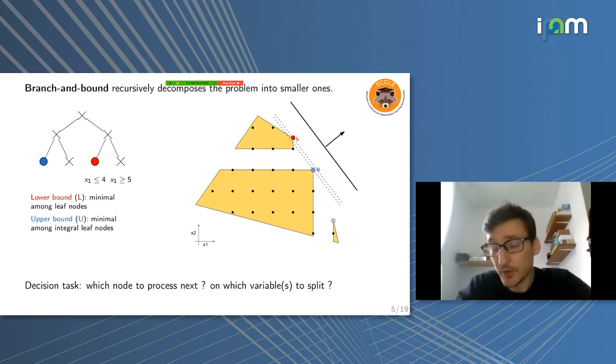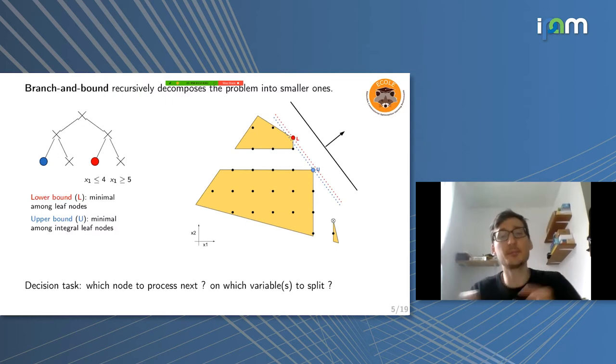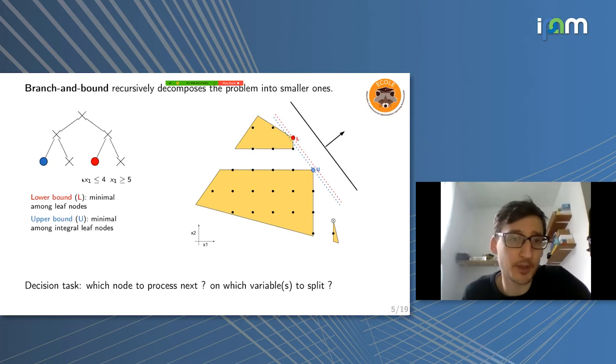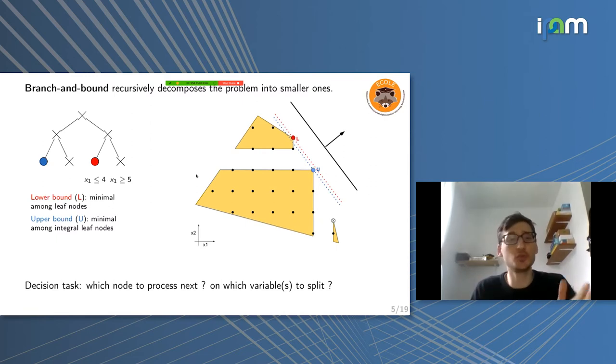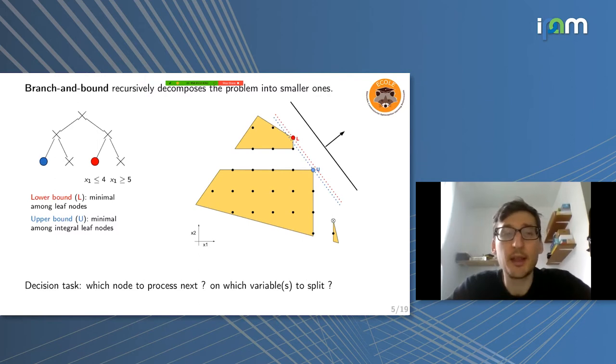In order to do exact solving, to have those two bounds getting close to each other, several methods exist. The most widely used is branch and bound, which has been presented already today, which recursively decomposes the problem into smaller ones. Basically, you build this branch and bound tree by adding inequality constraints over the variables. You split the feasible space in two, then in two, then in two, and so on. This tree gives you both upper bounds and lower bounds. And it is guaranteed to end. Worst case, you're going to explore the whole feasible space of your problem.